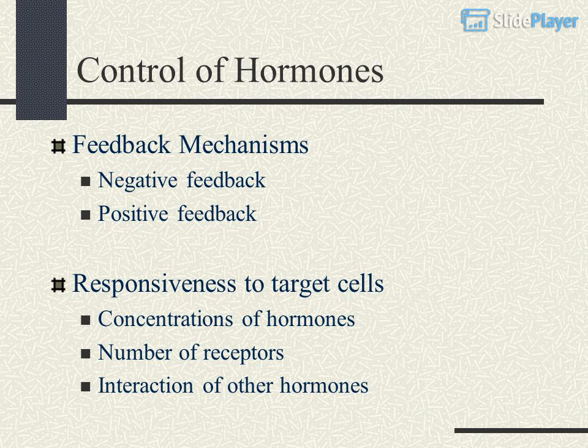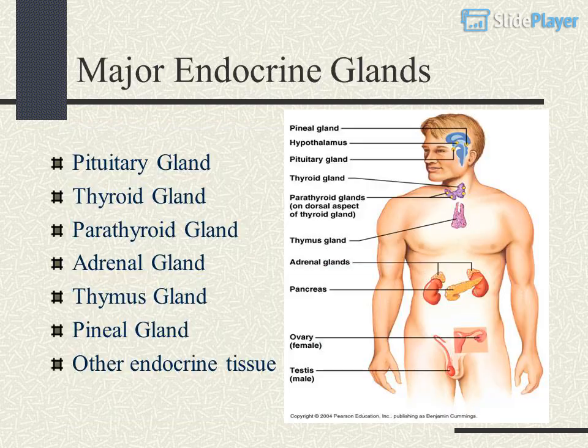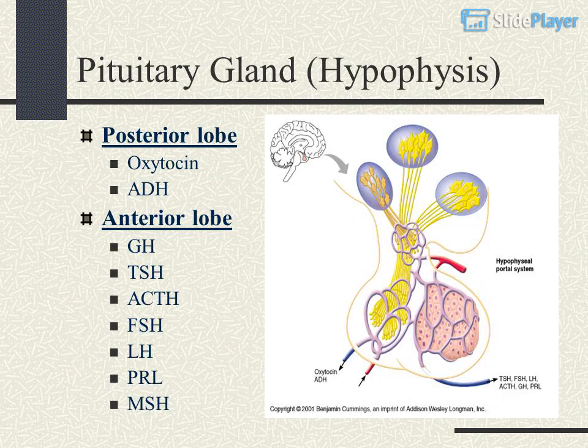Control of hormones via feedback mechanisms includes responsiveness of target cells, negative feedback, and positive feedback. Responsiveness of target cells depends on concentrations of hormones, number of receptors, and interaction of other hormones. Major endocrine glands: pituitary gland, thyroid gland, parathyroid gland, adrenal gland, thymus gland, pineal gland, and other endocrine tissue.